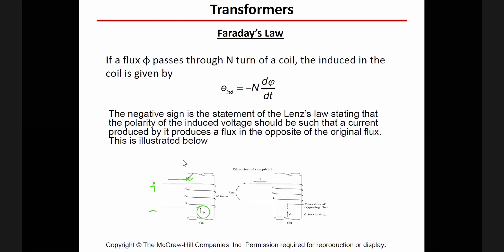If you have a voltage applied to a coil with a number of turns, the result will be magnetic flux generated. But we know from the previous chapter it's not directly like this. The voltage applied will cause current to flow in the wires; the current in the wires and number of turns will cause the MMF to be generated; the MMF with the reluctance of the core will cause the flux to flow. So it goes: first voltage, then current, then because of the current and number of turns we have MMF, and because of the reluctance we have flux.